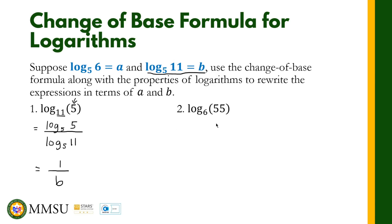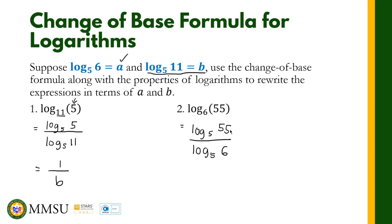For number 2, we have the logarithm of 55 in base 6. We do not have base 6 as given, so we can write this as the logarithm of 55 in base 5 over the logarithm of 6 in base 5, changing the base to 5 since our givens are in base 5. The logarithm of 6 in base 5 is given as a, but we have a problem with the numerator: the logarithm of 55 in base 5.